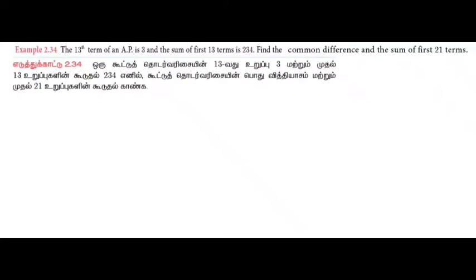Hi students, welcome to my channel. Example 34: The 13th term of an AP is 3, the sum of the first 13 terms is 234. Find the common difference.